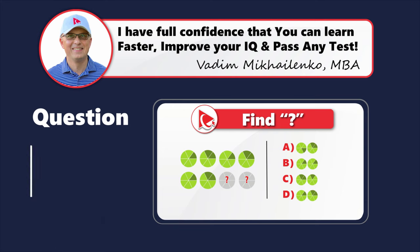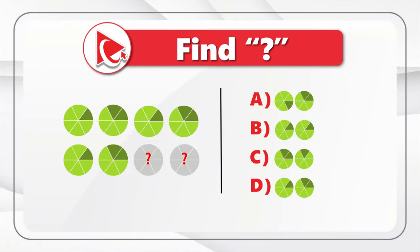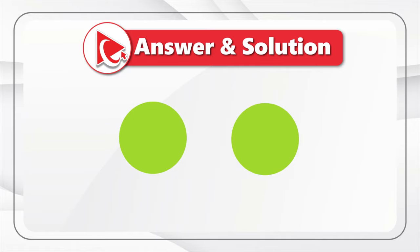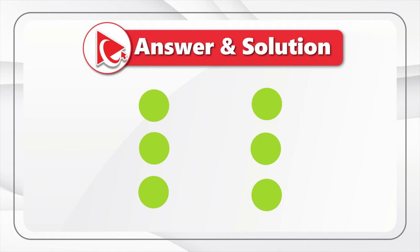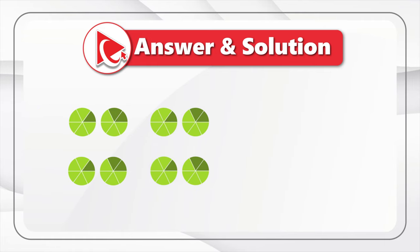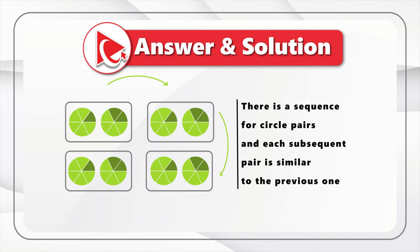I'm moving forward to share my version of the answer — if you have a better way to solve it, please post in comments. To answer this question, we need to detect the pattern, and the pattern here is very simple. Each circle is broken down into sections with darker and lighter sections. If you look closely, you will see that all circles are grouped in pairs, and the pattern is hidden in the sequence for circle pairs, with each subsequent pair being similar to the previous one.